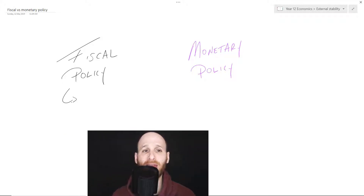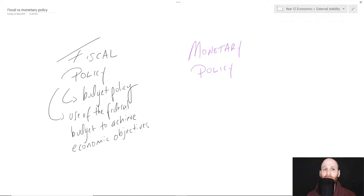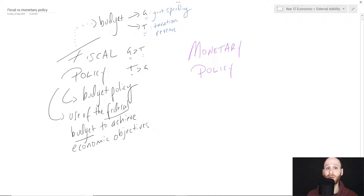So when we talk about fiscal policy, the easiest way to think about it is fiscal policy is just budget policy. Fiscal policy is all about the use of the federal budget to achieve economic objectives. So it's the federal government using its budget. When we talk about the budget, it's really looking at the amount of government spending and taxation revenue and the relationship between those two things. Is the government planning to spend more than taxation revenue? Is it planning to earn more than it spends? Or is it planning to have them equal? And all of these situations will create different economic consequences.